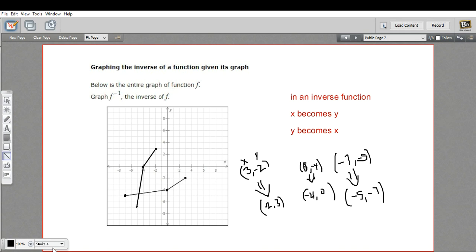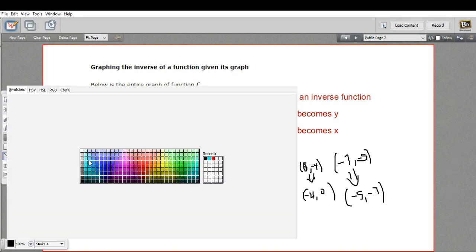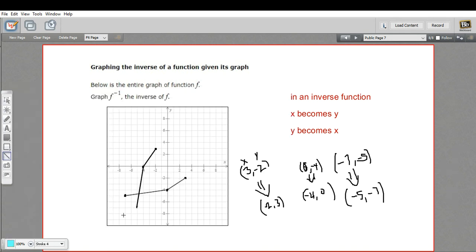Now if we did this correctly, if this is really the inverse, there's another property you should know about. And that is if you draw a line, the line y equals x, this 45-degree line that goes from left to right and up through the coordinate plane, it should bisect this. You should get a mirror image on either side, and that looks like exactly what has happened here. So that verifies that we really do have the inverse of our original function.